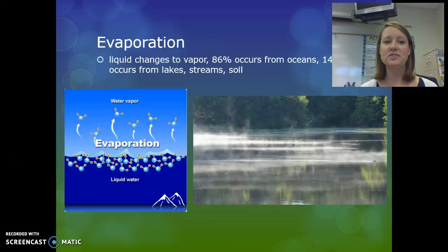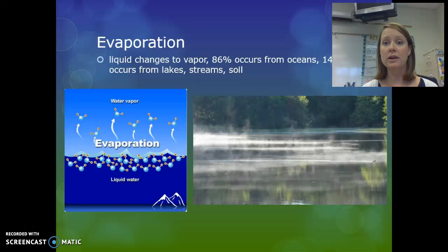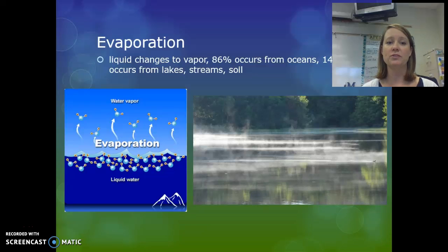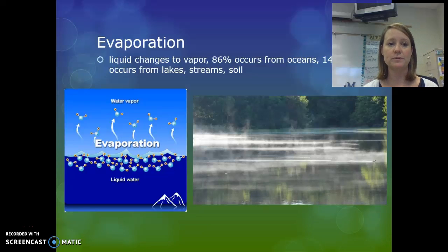Evaporation is the change of state from liquid to gas, or liquid to vapor. Eighty-six percent of all evaporation occurs from the oceans, which is where most of our water is located, and then 14% occurs from our surface water — lakes, streams, and even soil moisture.